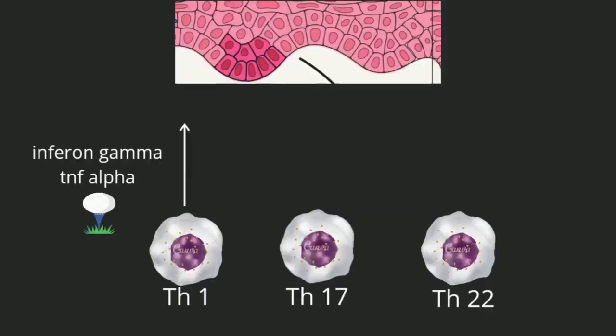Now, what do these three T cell subtypes do? Th1 cells produce interferon-gamma — like the keratinocytes, they also take the 'golf tees' and produce their own interferon. Interferon-gamma and TNF-alpha further act on the dendritic cells as well as the keratinocytes, asking them to produce more inflammatory cytokines so that the inflammatory cascade continues. The main role of Th1 cell cytokines is the maintenance of the inflammatory cascade.